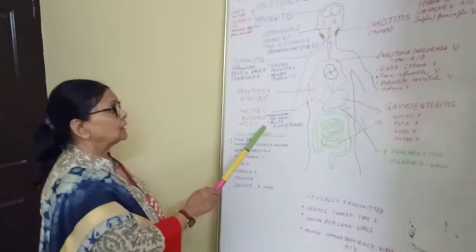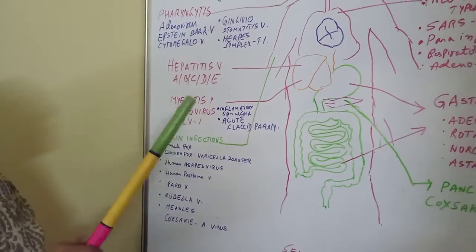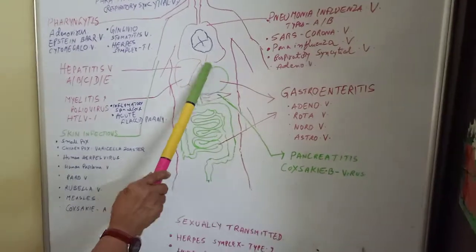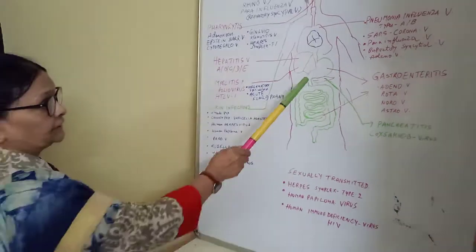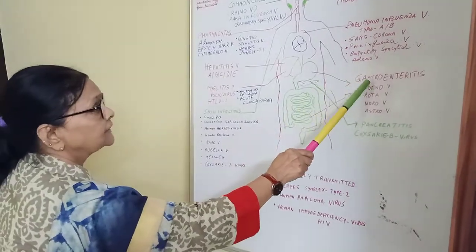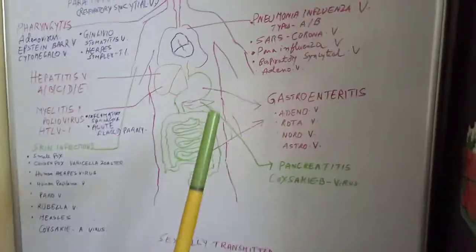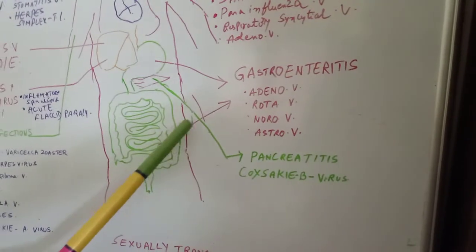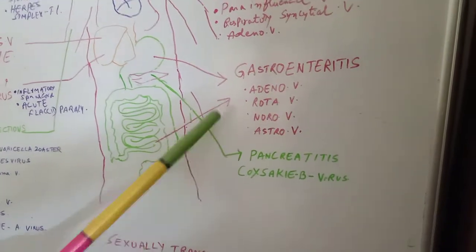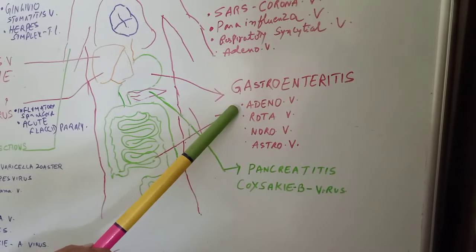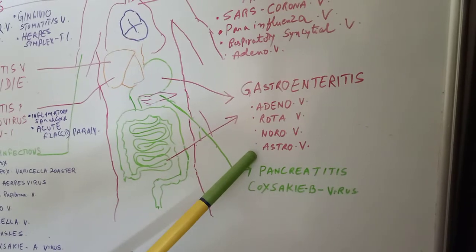Inflammation of the spinal cord leads to acute flaccid paralysis. Moving to the stomach — certain viruses infect the stomach and intestines, causing a disease called viral gastroenteritis. It is caused by four types of viruses: adenovirus, rotavirus, norovirus, and astrovirus.